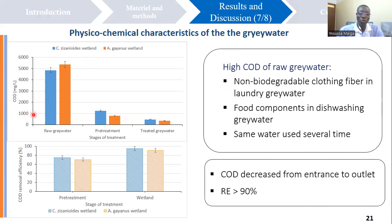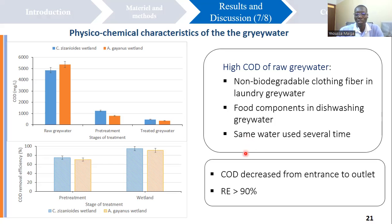The chemical oxygen demand of raw water was also high. This high value can be explained by the non-biodegradable carbon fiber in laundry greywater, by the food components present in dishwashing greywater, and specifically due to the fact that the same water was reused several times for several activities. The treatment system performed well in the elimination of chemical oxygen demand: for the pre-treatment step, the removal efficiency reached 70%, and for the whole wetland, the removal efficiency was higher than 90%.